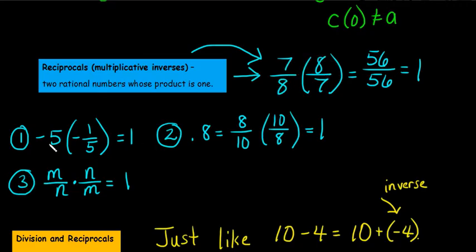Here's some more examples. Negative 5 times negative 1 fifth. When you work that out, you get 5 over 5, which equals 1.